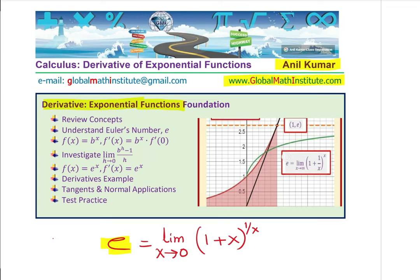Here is an alternate formula for e. e is also given as limit x approaches infinitely large number, 1 plus 1 over x to the power of x. So, it is one and the same thing. Both are related, same thing.